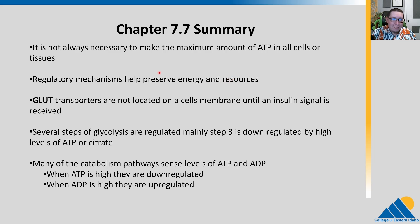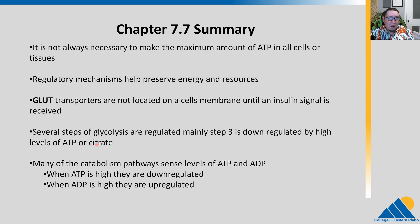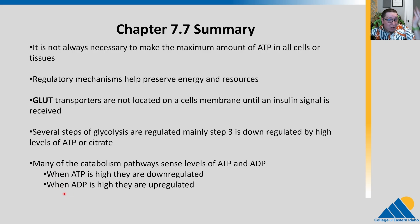In summary, it's not always necessary to make the maximum amount of ATP in all our cells or tissues. When we're sleeping, resting, or not physically active, we need less than when we're running up the side of a mountain. Regulatory mechanisms help preserve our resources and our energy — we're saving that glucose for when we really need it. We talked about GLUT transporters, which are not located in the cell membrane until insulin signals that there's sugar to move into the cell. We talked about glycolysis regulation, mainly at step three: if there are high levels of ATP or citrate, it turns down that enzyme. Many catabolic pathways sense ATP and ADP — high ATP down-regulates and high ADP up-regulates, because we need to make more ATP.